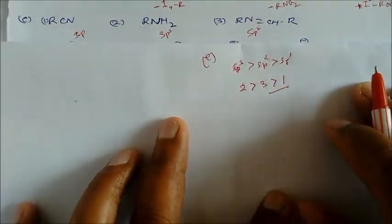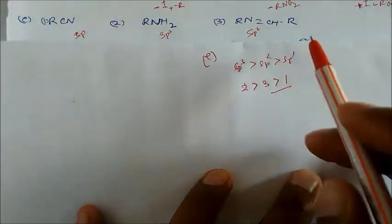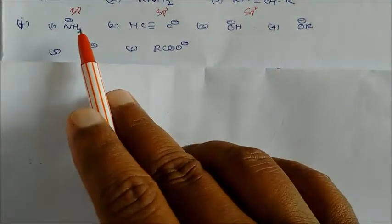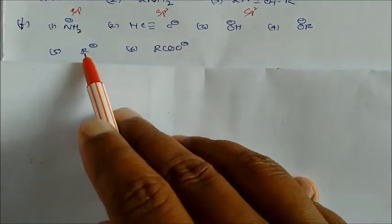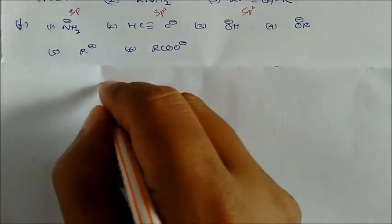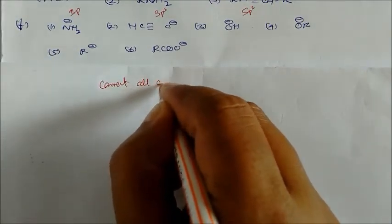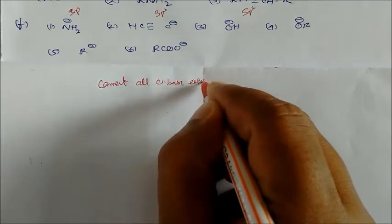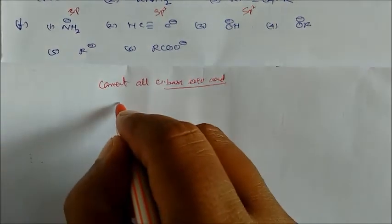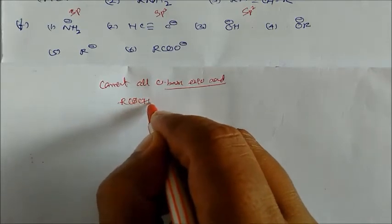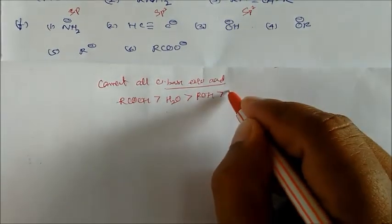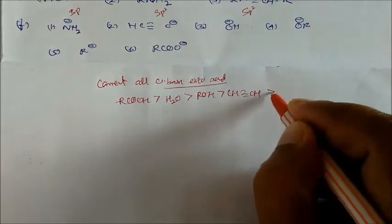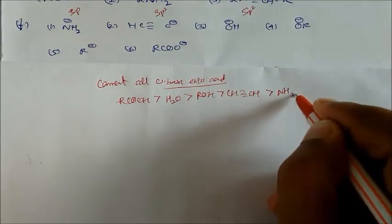For determining which conjugate base is more basic, convert each to its conjugate acid: RCOOH is more acidic than water, which is more acidic than ROH, which is more acidic than HC≡CH, which is more acidic than ammonia. The most acidic conjugate acid corresponds to the least basic anion.